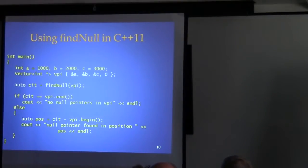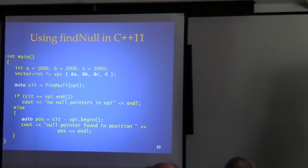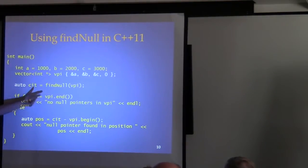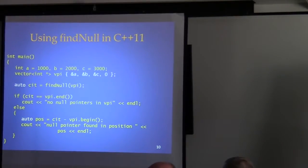Here's what the user code looks like in C++11. First, brace initialization for vectors — now I can just do that intuitively. The auto keyword: the compiler already knows what type find_null returns, so why do we have to write it out? We just let the compiler look at its declaration of find_null and know what it's supposed to return. So 'cit' is declared as auto — it's whatever find_null returns.